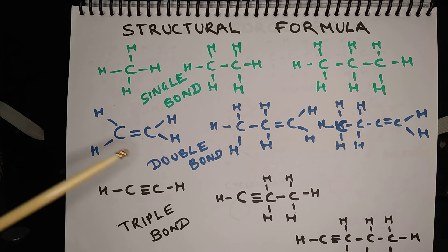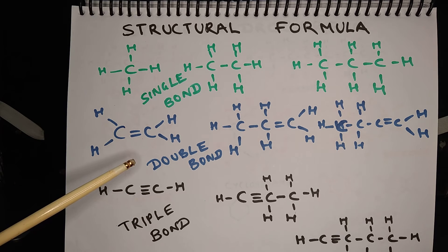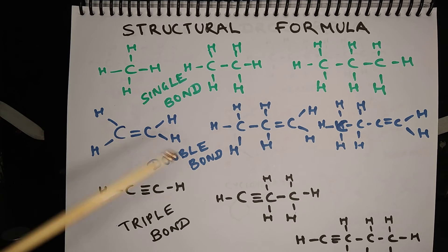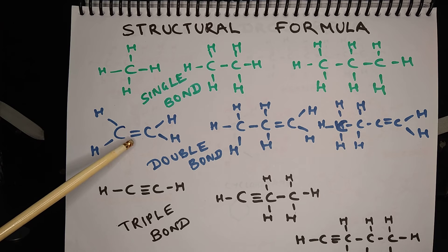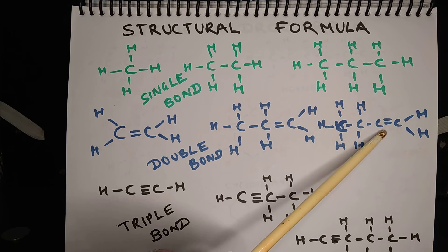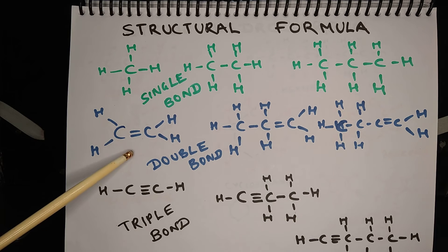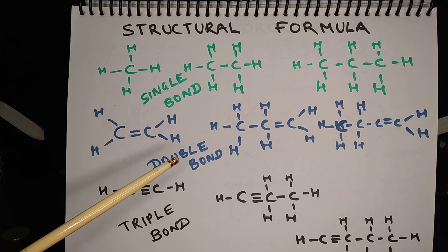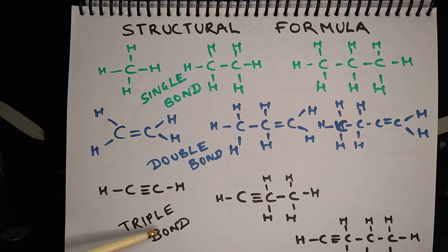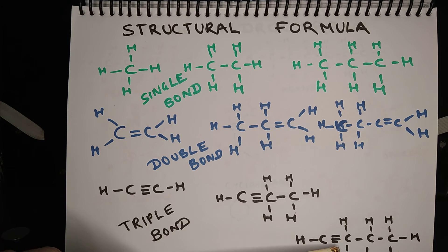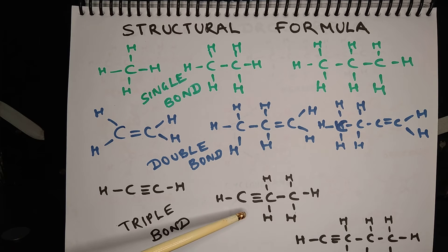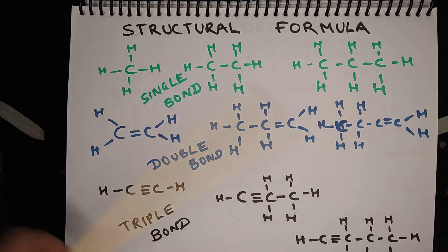These are alkenes: ethene, propene, and butene. You will notice that at least one bond is a double bond, and because of a double bond, this is an unsaturated hydrocarbon. These are alkynes — here you will notice the presence of triple bonds. So this is ethyne, this is propyne, and this is butyne.